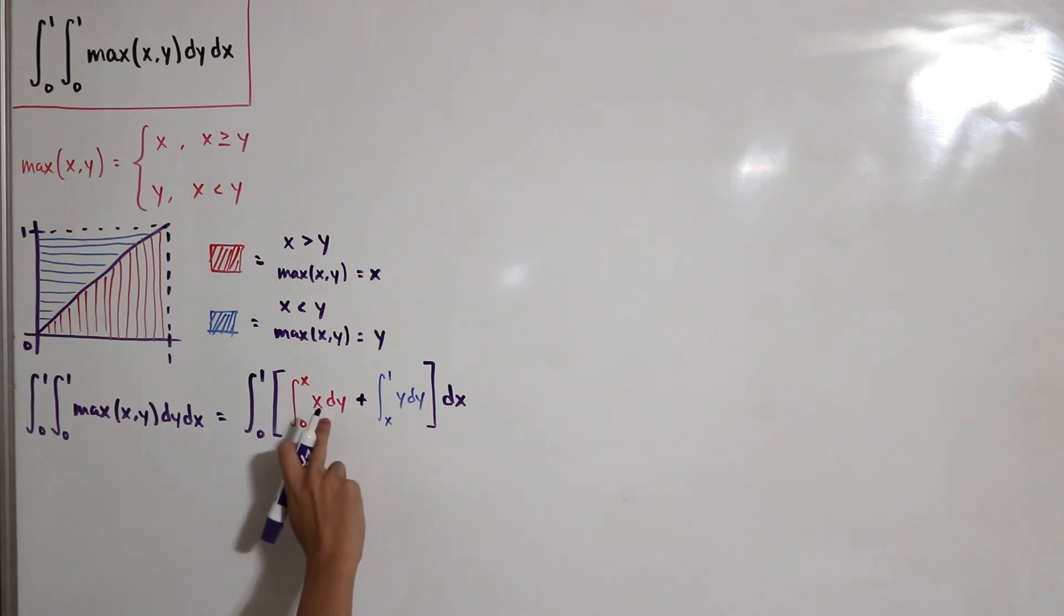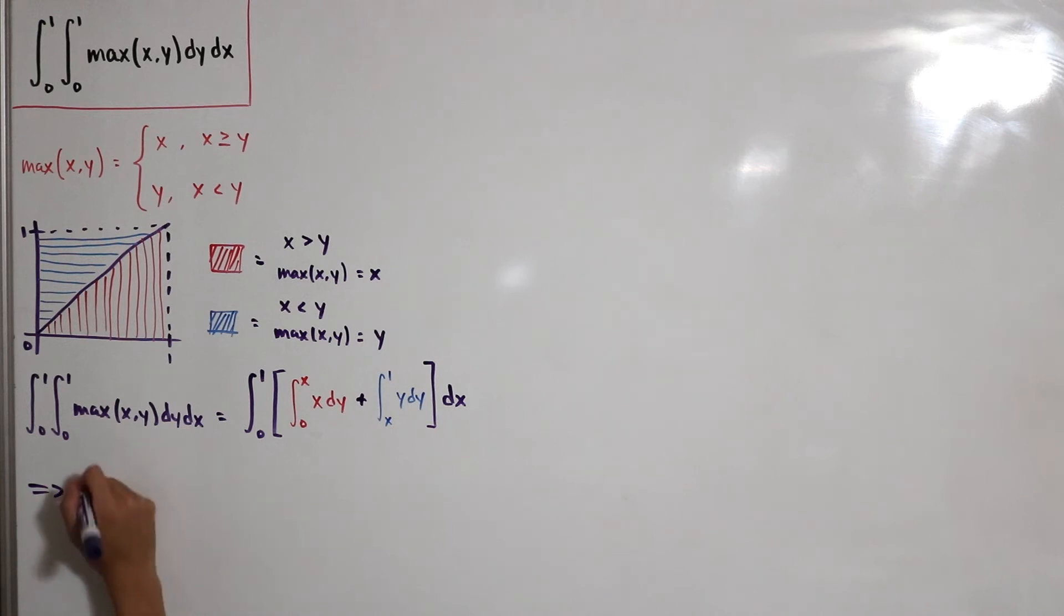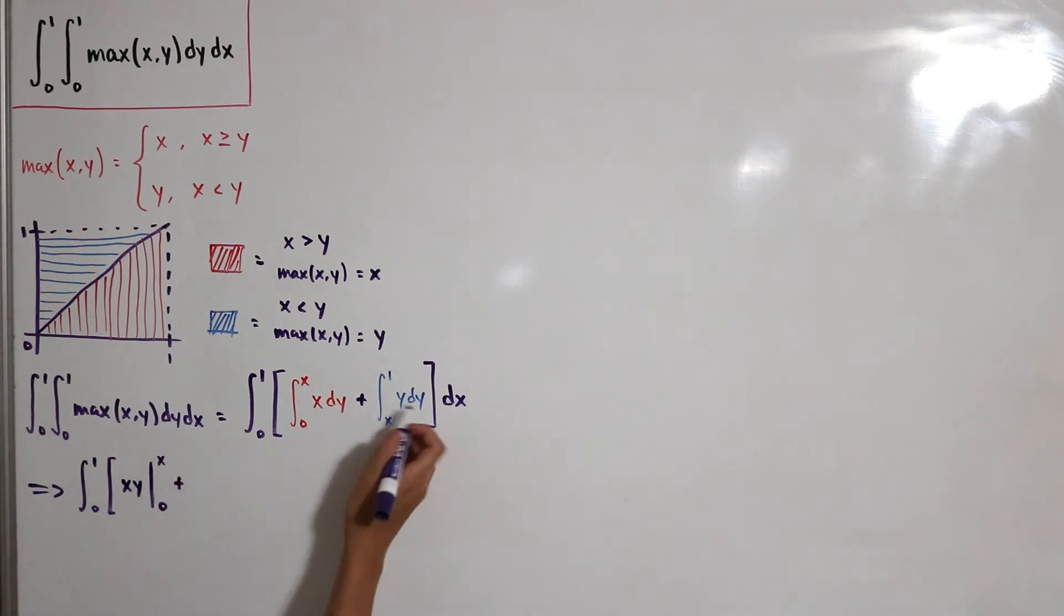If we're integrating this, over here this is x times y, and we evaluate this from our bounds from x to zero. Then plus, this is in respect to y, so y is the variable. Use the power rule. Now we have one half y squared from x to one, then dx.